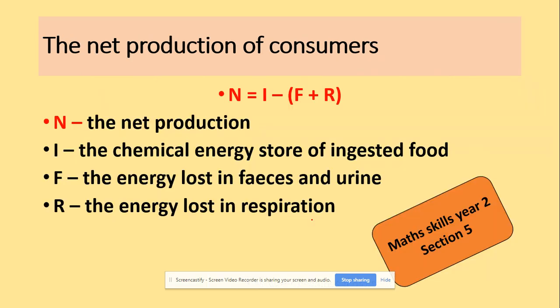The net primary production of consumers is represented by another equation: the chemical energy store of ingested food, minus energy lost in feces and respiration. That's another equation you need to be aware of, and in my maths skills video for section five there are more questions and problem-solving situations based on that equation.